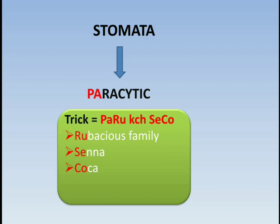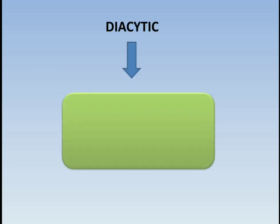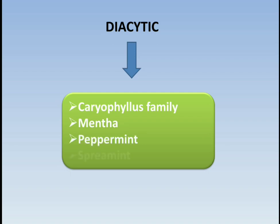Next is diacytic stomata. The drugs showing diacytic stomata are: first, caryophyllus family; second, mentha; third, peppermint; and fourth, spearmint.